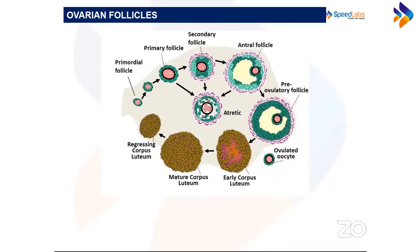Folliculogenesis begins during the intrauterine life of the fetus. The ovary is formed at 11 to 12 weeks of pregnancy in females — as confirmed by the student. For males, the testes form at 7 to 8 weeks, but they descend into the scrotum by 7 to 8 months, or just before delivery.